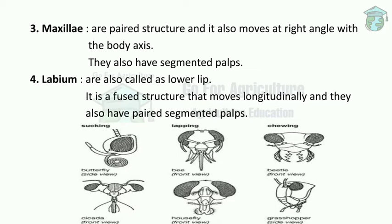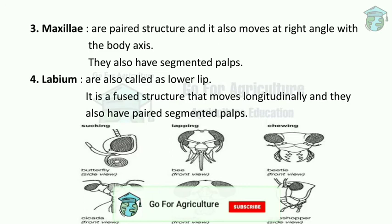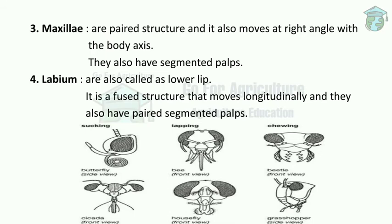On broad classification, mouth parts are of two types: mandibulate, meaning jaw-like, and haustellate, which helps in sucking liquid food. The mandibulate type is also called the chewing type and is used for biting and grinding solid foods. It is found in dragonflies, termites, beetles, ants, cockroaches, grasshoppers, and caterpillars.